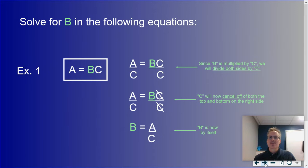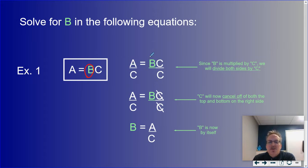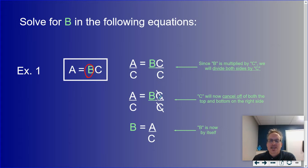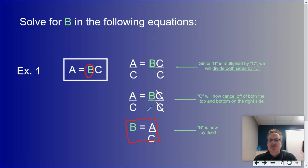Let's do an example. In the equation A equals BC, if we are trying to solve for B, currently we're multiplying B by C. The opposite of multiplying is dividing, so I'm going to divide both sides by C. On the right-hand side C on top and bottom cancel out, leaving B by itself. So B equals A over C — the same way you learned in grade seven.